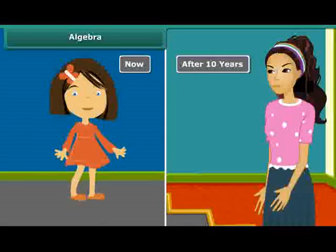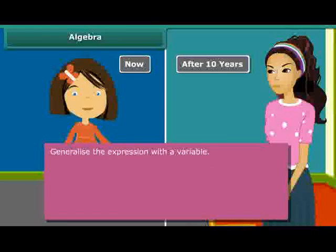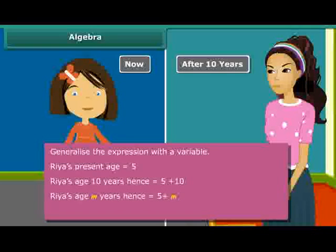Rhea is 5 years old now. Express her age 10 years from now. Generalize the expression with a variable. Rhea's present age is 5. Rhea's age after 10 years is 5 plus 10. Rhea's age M years hence: 5 plus M.